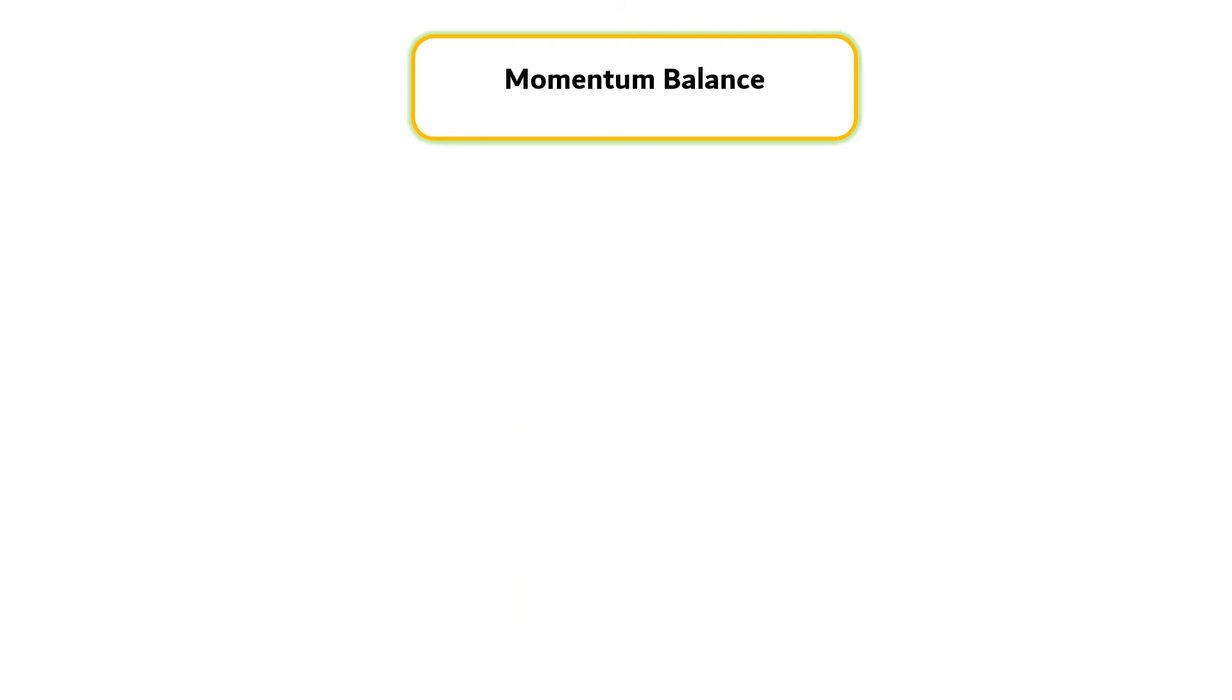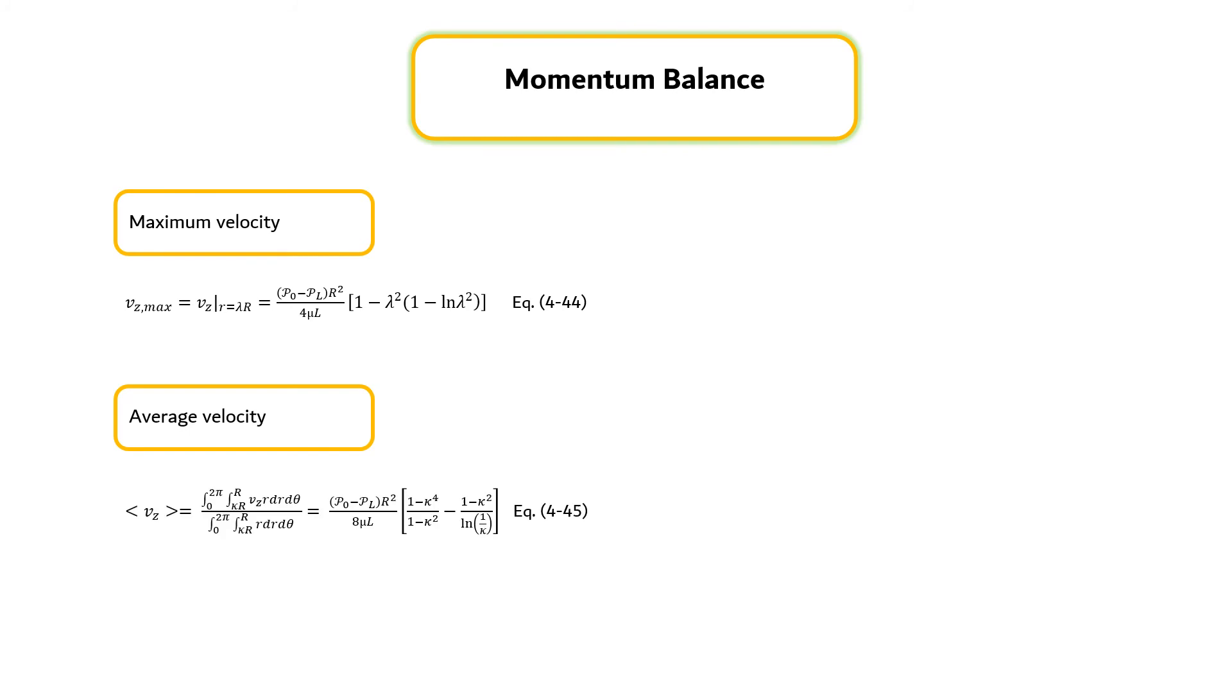Once the velocity distribution is known, a number of quantities can be calculated. First, the maximum velocity, which can be calculated by equation 4.44. Second, the average velocity is given by equation 4.45.